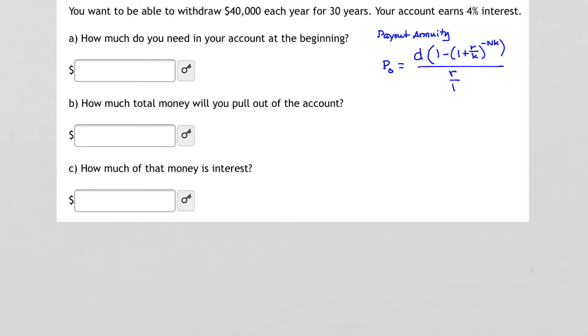All divided by R over K. This is our payout annuity formula. How is that going to work to solve our first part of the problem? Well, we're looking to know how much money do we need at the beginning in our account. Namely, we're searching for P sub 0. So this is what we don't know.